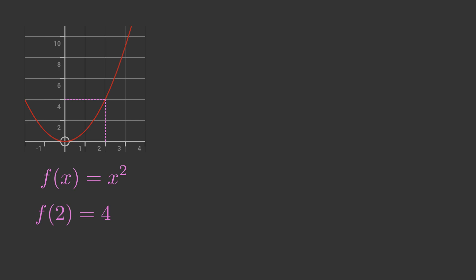Now let's imagine we aren't allowed to calculate f for the value of 2. We are allowed to calculate the function for any other value, just not 2. But even with this restriction, we can still find something out about the value of f. We can't calculate f directly, but we can calculate f for a value of x that is very close to 2.